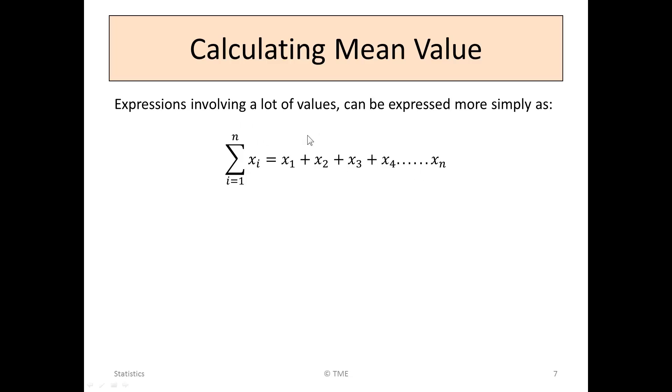Expressions involving a lot of values can be expressed more simply rather than x₁ plus x₂ plus x₃ and going on forever. You can write that as sigma, the sum from i equal to 1 to n of xᵢ. The sum of x implies x₁ plus x₂ plus x₃ all the way to xₙ.